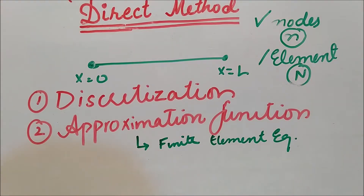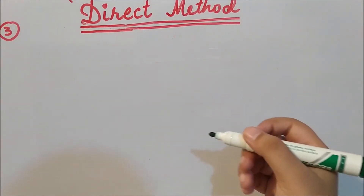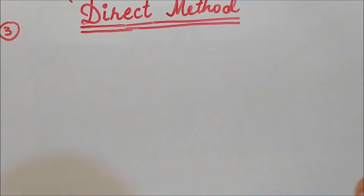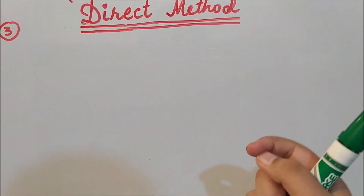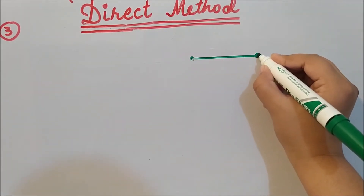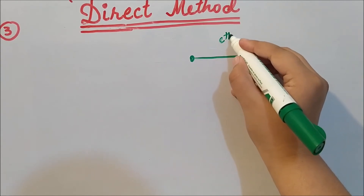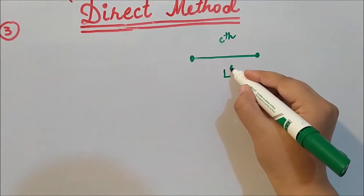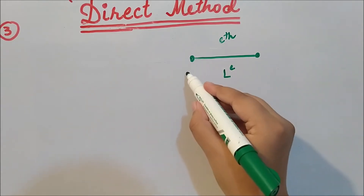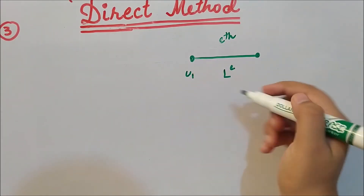Hello everyone, this is from eAcademy. We will continue the direct method — step three, which is the derivation of the element level matrices and the load vectors. To understand what type of matrix we are going to derive, we first take an element having length L with a superscript e, and having two nodes — node one and node two — with displacements u1 and u2 at each boundary.